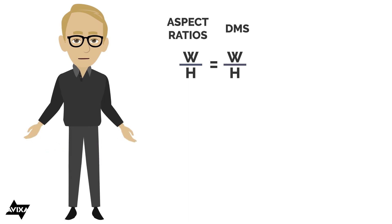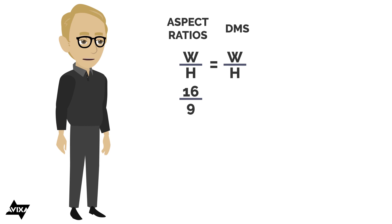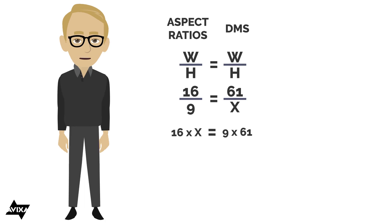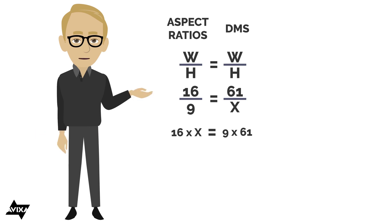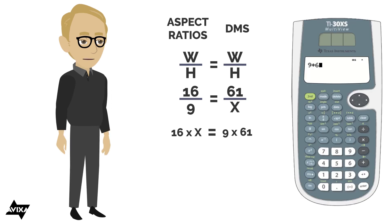For example, I've got a 16:9 display that is 61 inches wide. So I set up 16 over 9 equals 61 over x, where x is the height we're trying to solve for. We cross-multiply: 16 times x equals 9 times 61, and 9 times 61 gives us 549.